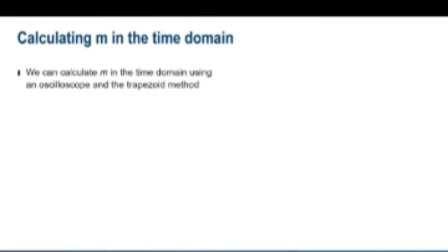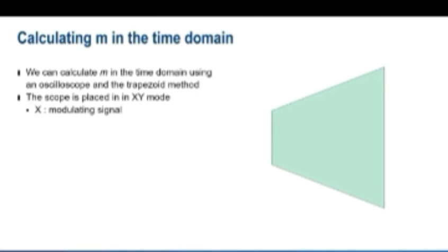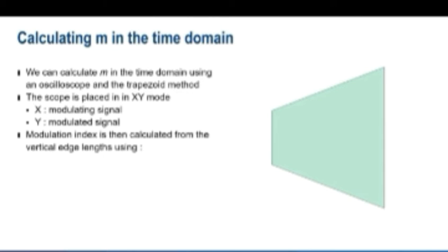In the time domain, we can calculate the modulation index m using an oscilloscope with a method called the trapezoid method. It is done by placing the scope in X-Y mode, with X being the low frequency modulating signal and Y being the AM modulated RF signal. A trapezoid will appear on the scope, and the modulation index is calculated using the length of two vertical edges, a and b, as well as a simple formula.